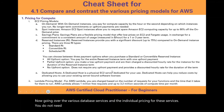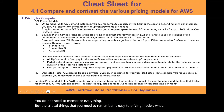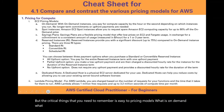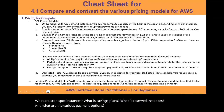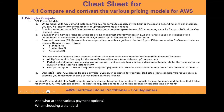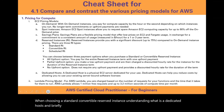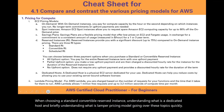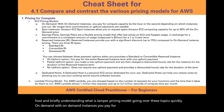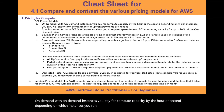For EC2 pricing models, the key things to remember are: on-demand, spot instances, savings plans, reserved instances, payment options, dedicated hosts, and lambda pricing. With on-demand instances, you pay for compute capacity by the hour or second depending on the instance type, with no long-term commitments or upfront payments required.